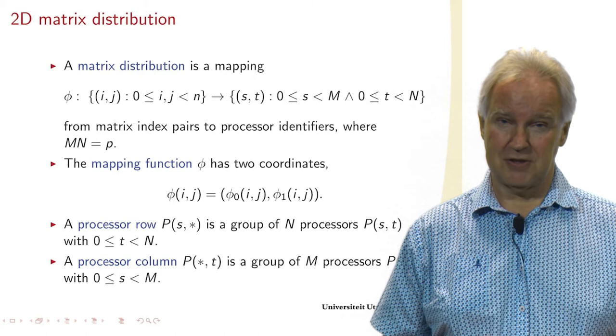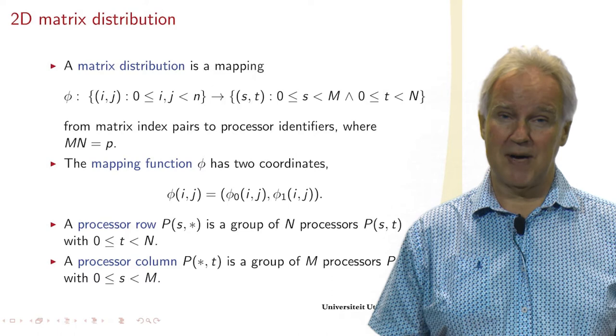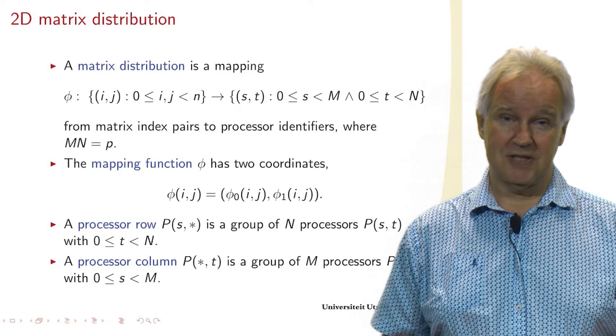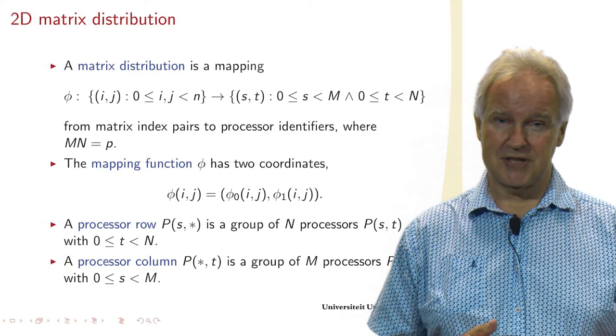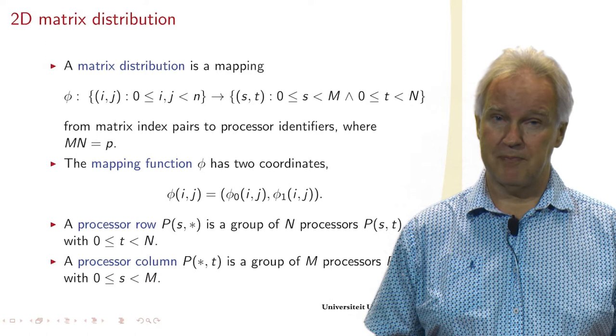So it's just a two-dimensional numbering, and then the mapping function phi has two coordinates. So the phi of element IJ is a pair phi_0 of IJ, phi_1 of IJ. So a processor row P(S,*) is a group of processors that all have the same first coordinate S. And we can similarly define a processor column.